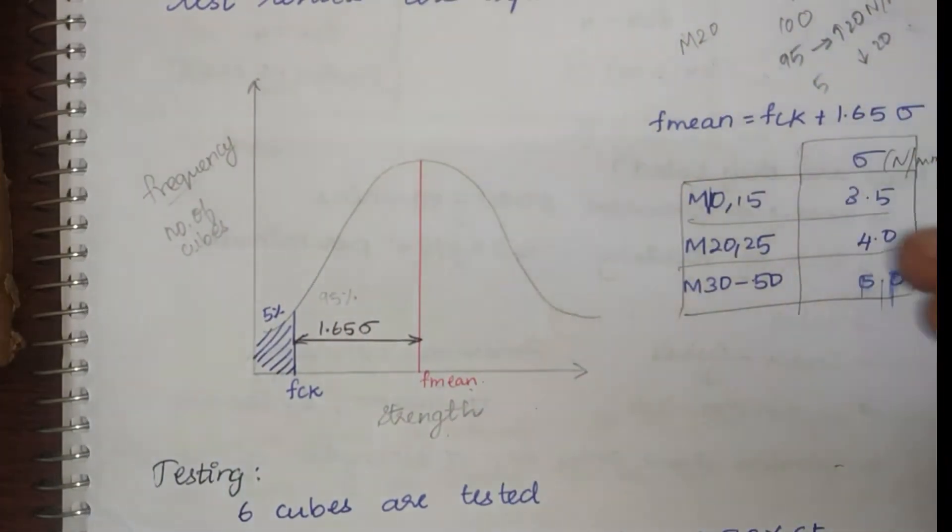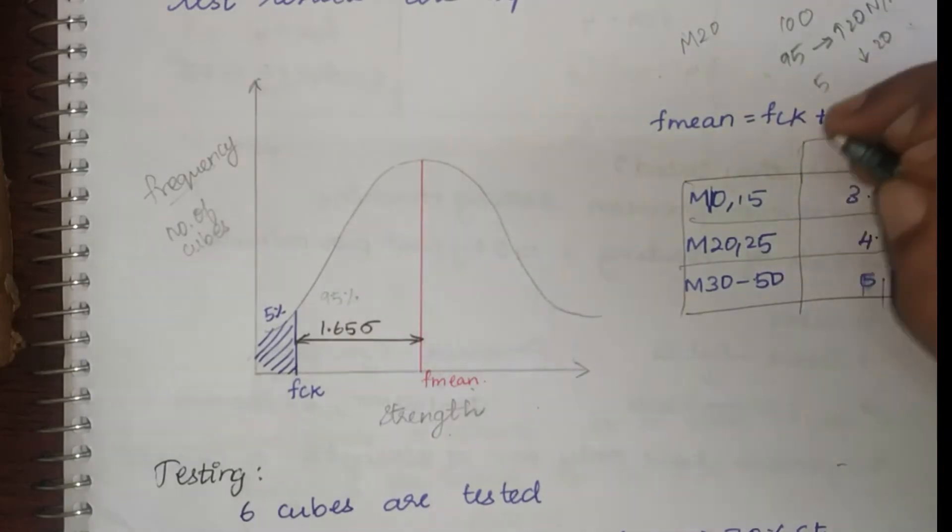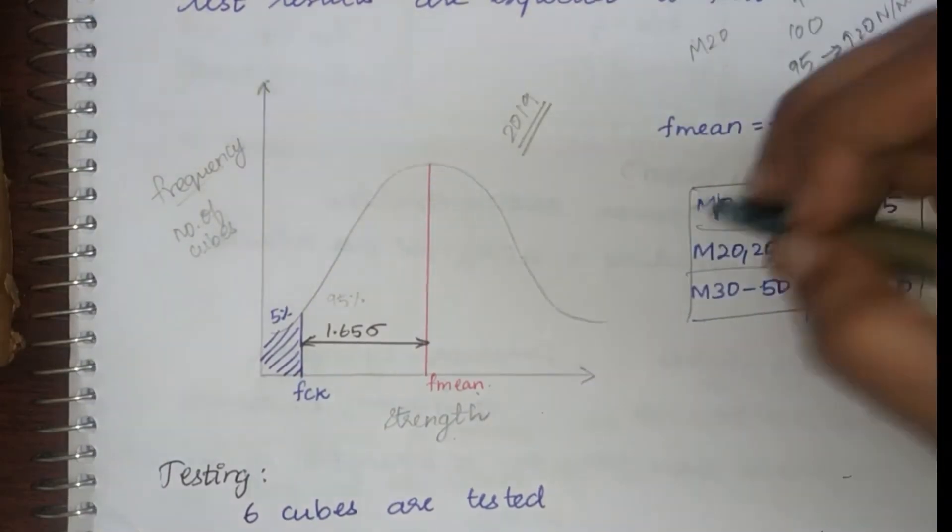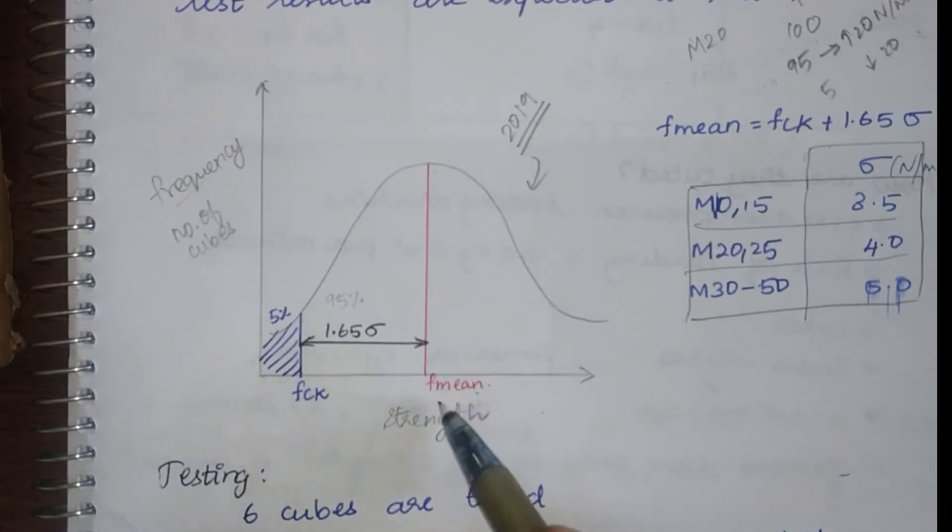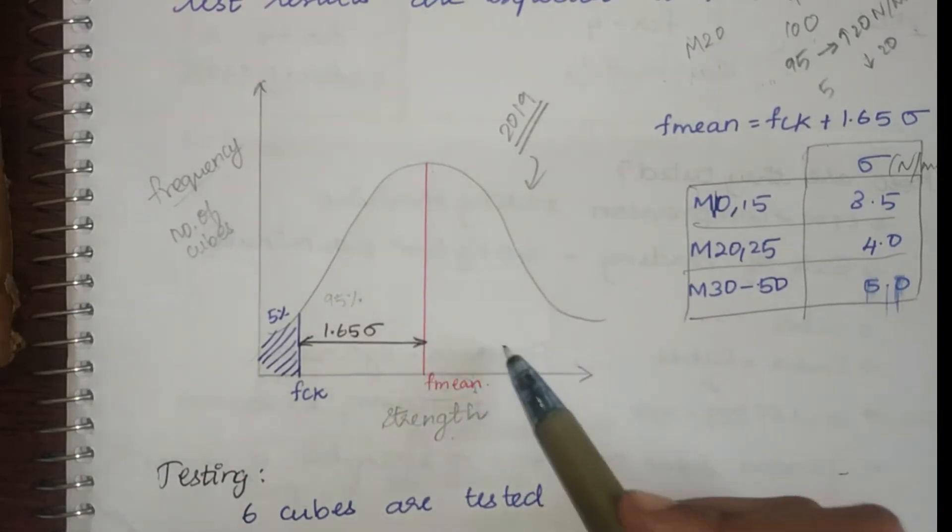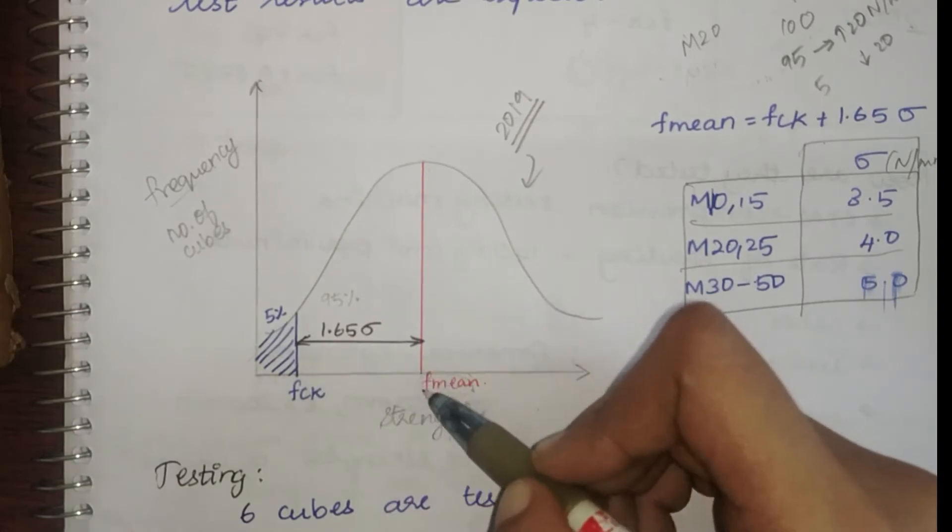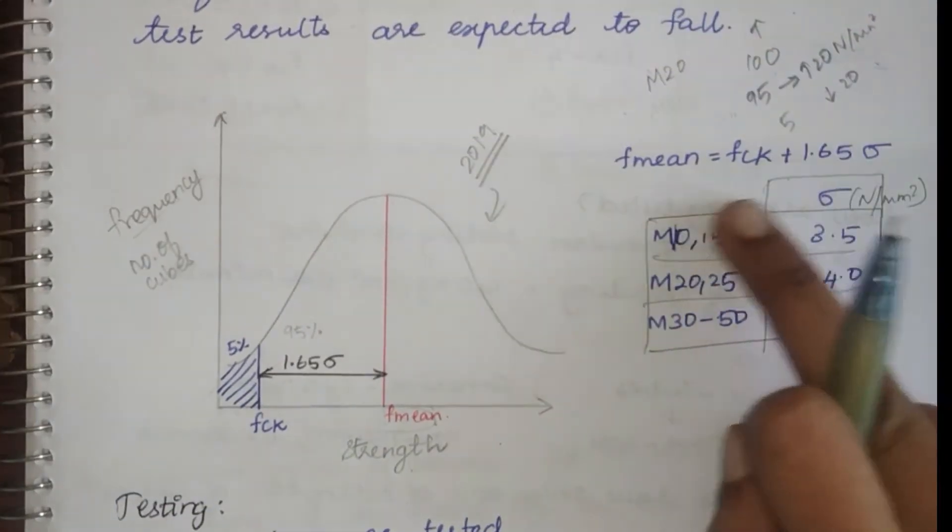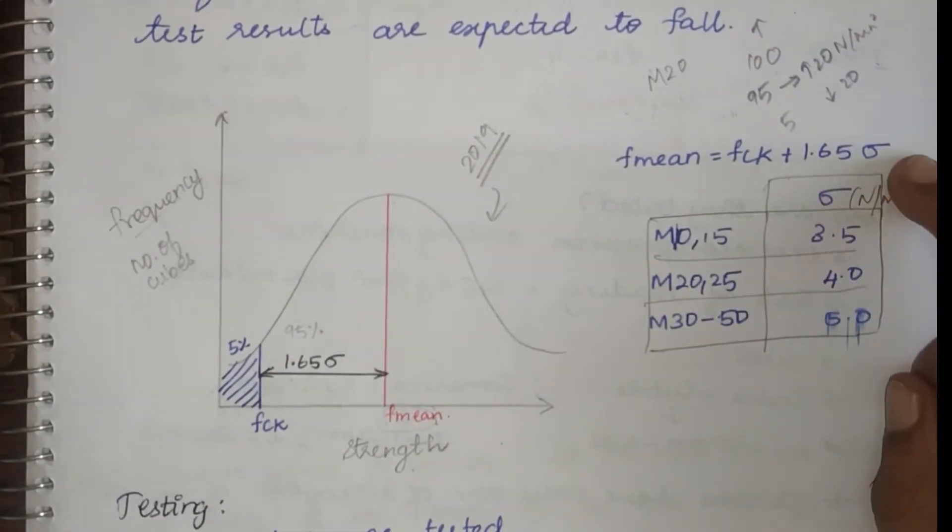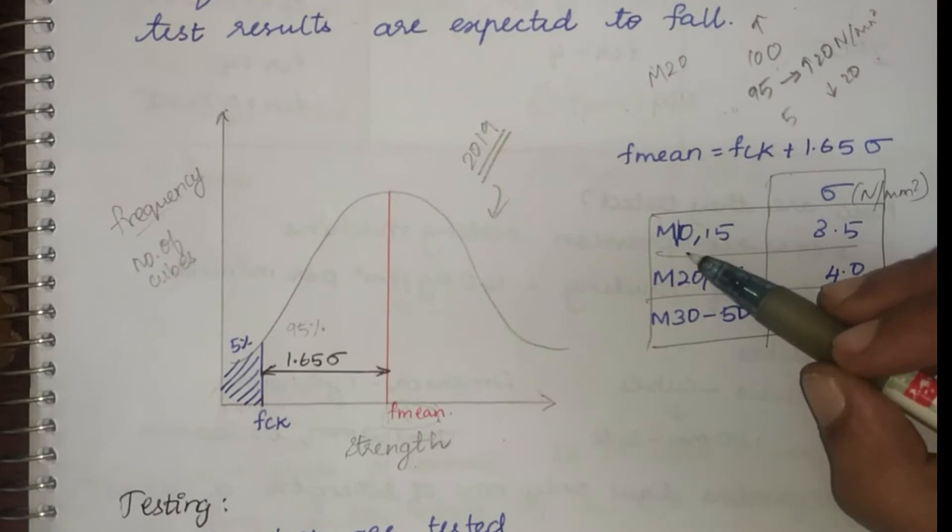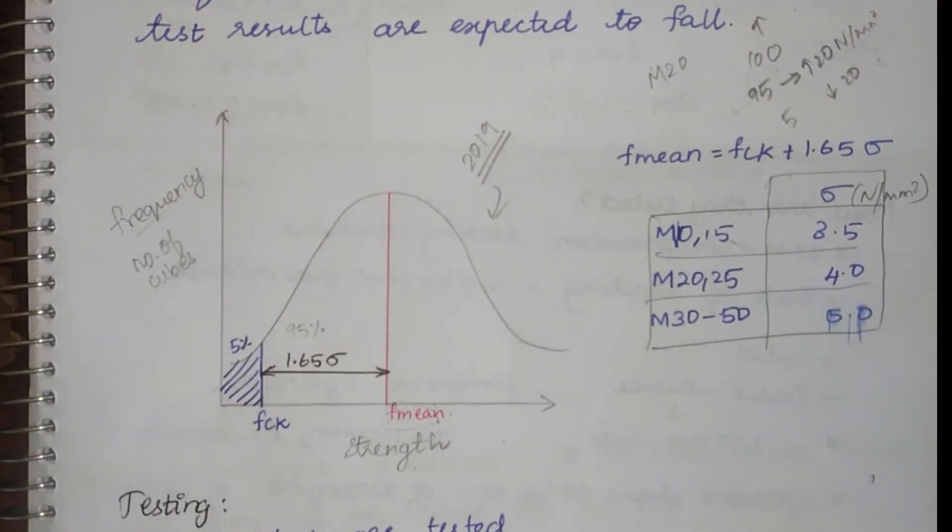In mix design, the first step is to find f mean. I hope you guys are familiar with mix designs. If you haven't watched my video, watch it. I have made a video based on the new code, which is the 2019 code, on how to make a mix design. The links are in the description box below. Now coming to this topic, we can see that our f mean is equal to fck plus 1.65 standard deviation. From that we can find that f mean is equal to fck plus 1.65 times standard deviation. This standard deviation depends upon the type and grade of concrete. For M10 M15 it is 3.5. For M20 M25 it is 4. For M30 to 50 it is 5.